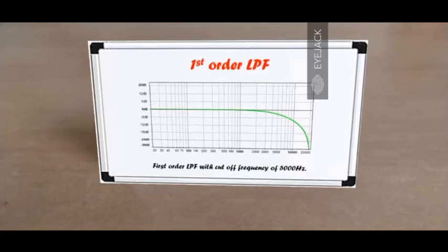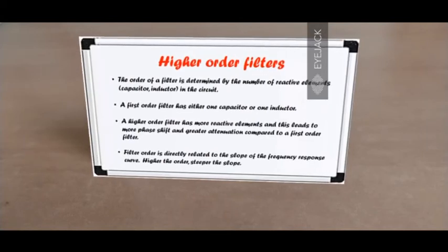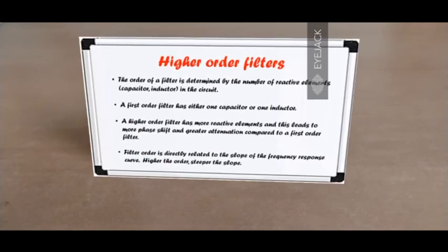Let's look at higher order low-pass filters. The order of a filter is determined by the number of reactive elements — that is, the number of capacitors and inductors in the circuit. A first order filter has either one capacitor or one inductor. A higher order filter has more capacitors or inductors, leading to greater phase shift and greater attenuation compared to a first order filter. The filter order is directly related to the slope of the frequency response curve — a first order filter has a very gradual slope.